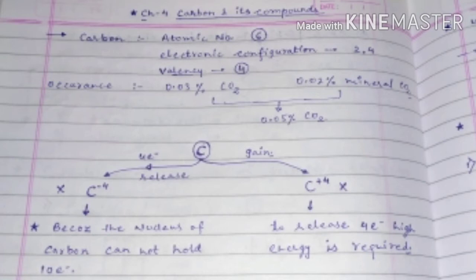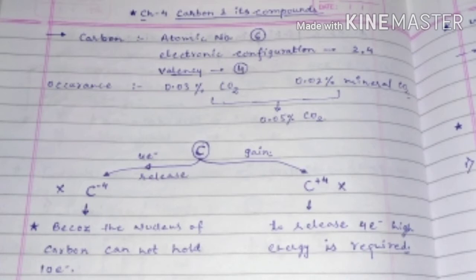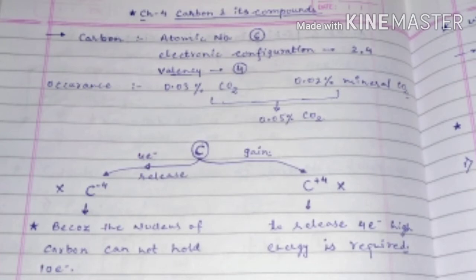Carbon will also not form an anion, because whenever carbon gains four electrons it will have ten electrons total. The carbon nucleus cannot hold ten electrons. So how does carbon achieve a noble gas configuration?